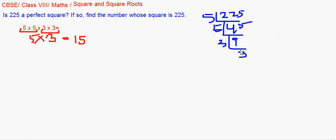Let's take one more example. We have to check if 63504 is a perfect square or not, and if so, find whose square it is. Again, we express it as a product of prime factors.